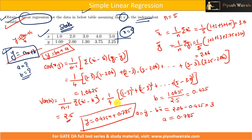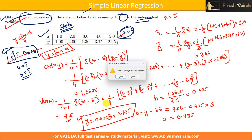Such type of questions you can expect in the gate exam — five or six data points will be given and you need to calculate the expression for y or the value of b, which is the regression coefficient. If they ask what will be the value of y when x equals 9, just substitute x equals 9 in the equation. In the next video, we are going to discuss multivariate linear regression and performance metrics.